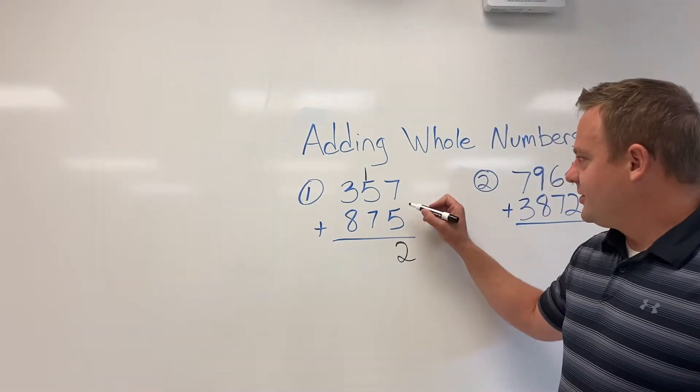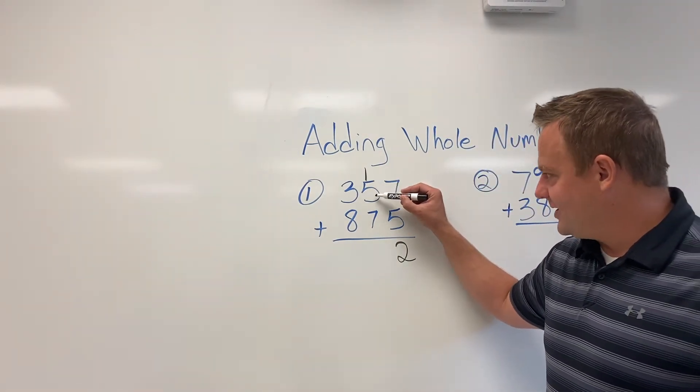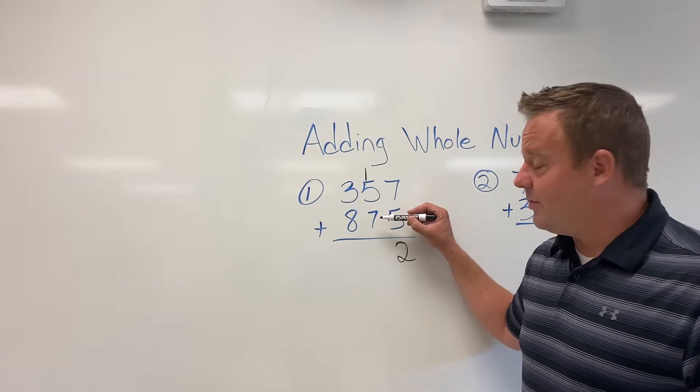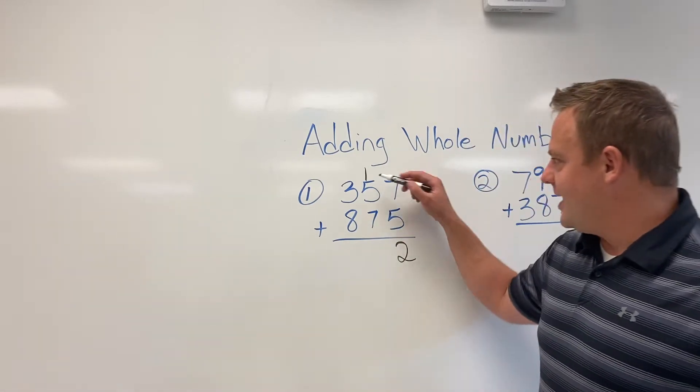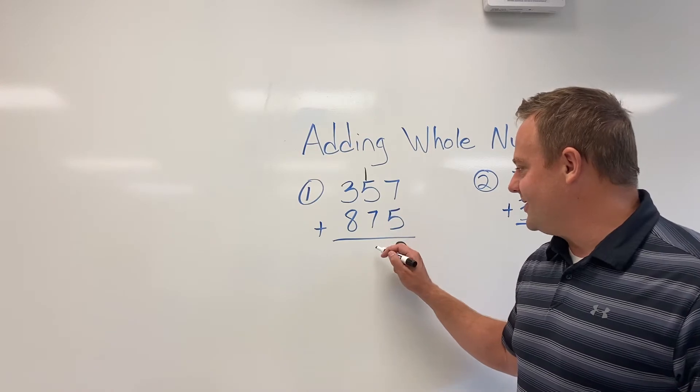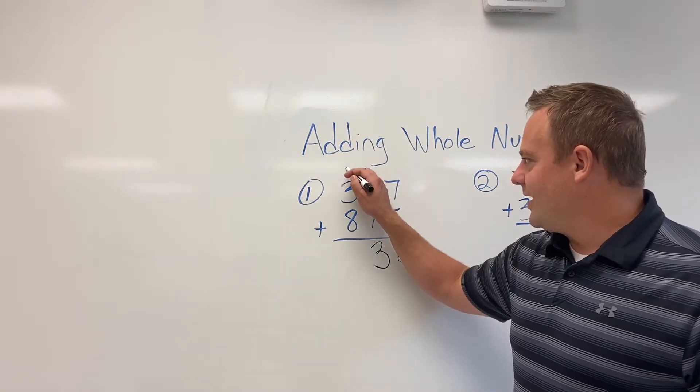So now we have a 10 plus 50 plus 70 is essentially what we're doing, but to make it easier, we say one plus five is six plus seven is 13. We'll carry a one.